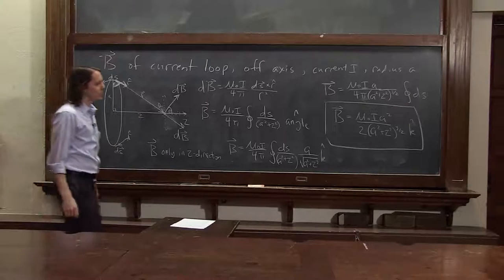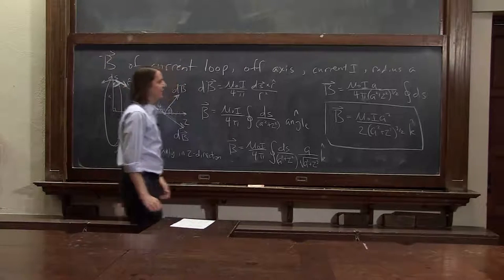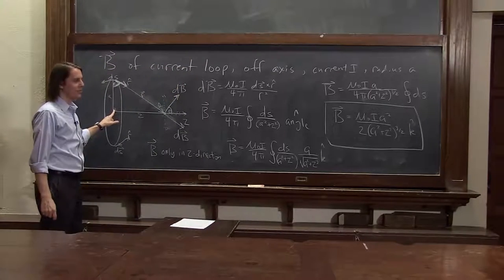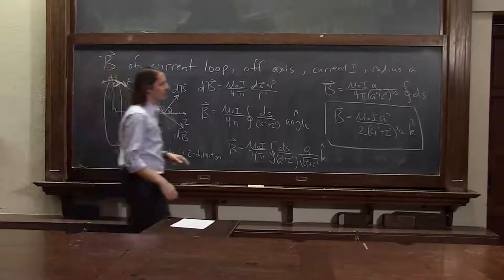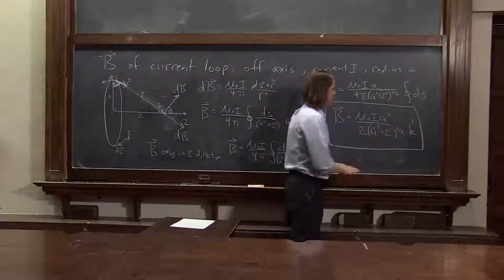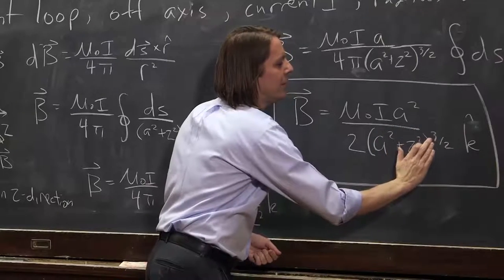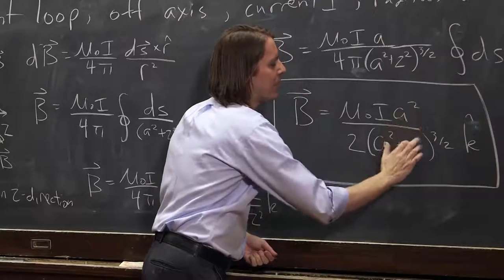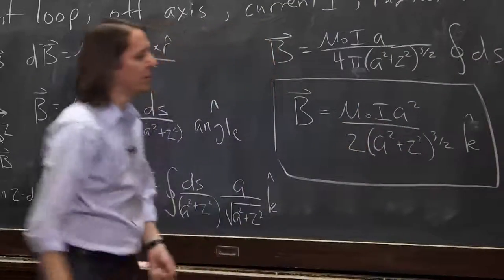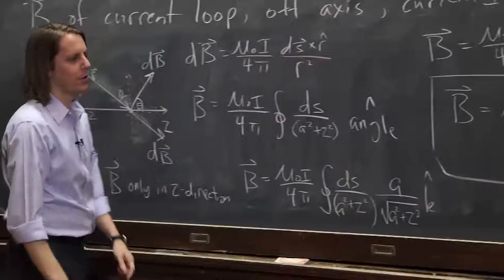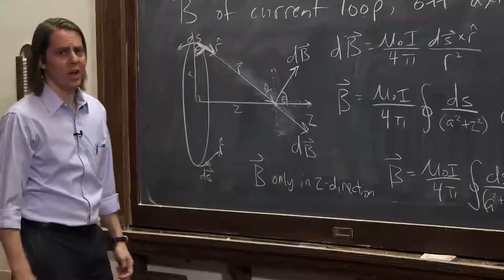Now, whenever you do a problem like that, there's a way to check it. One way to check it is, does it match our answer here in the center of the loop? Well, that's simply the answer when z is 0. So let's let z be 0. z goes away. a squared, square root of a squared is a cubed. a cubed in the bottom, a squared in the top, it becomes mu naught I over 2a. It worked. It's even in the right direction, in the k direction.